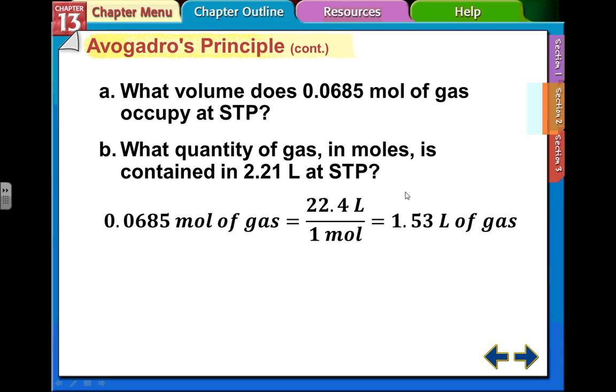We have 2.21 liters. Obviously, we're going to have less than one mole, because there's 22.4 liters in one mole. So do 2.21 divided by 22.4, and you get about a tenth of a mole of the gas, so 0.0987.